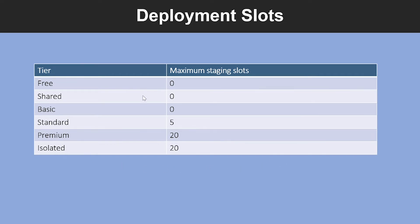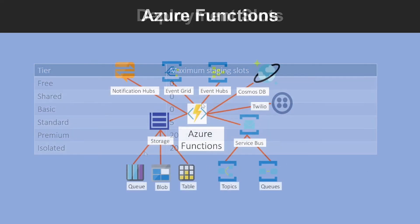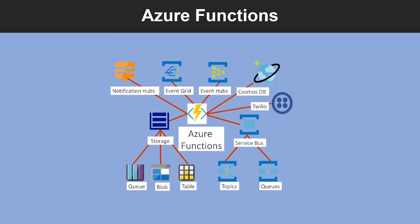This table shows the maximum number of slots you can create within each tier. Now let's understand what Azure Functions are. Azure Functions allow you to run small pieces of code called functions without worrying about application infrastructure. With Azure Functions, the cloud infrastructure provides all the up-to-date servers you need to keep your application running at scale. A function is triggered by a specific type of event. You can use Azure Functions for serverless applications, with a choice of language: C#, Java, JavaScript, Python, or PowerShell. You only pay with a per-use pricing model, and you can bring your own dependencies. You get integrated security and simplified integration.